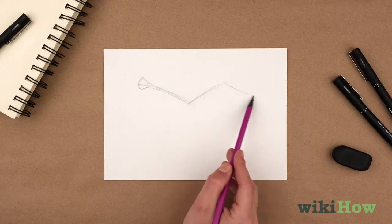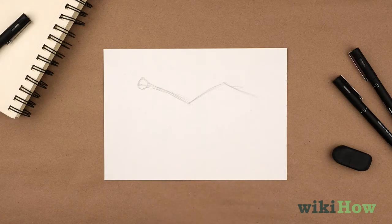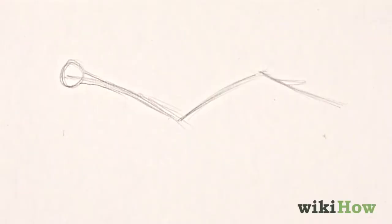Next, attach a hand section that is slightly shorter than the forearm section, and angle it back down.